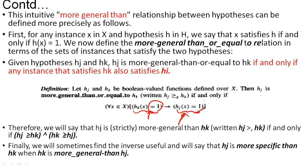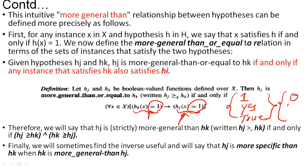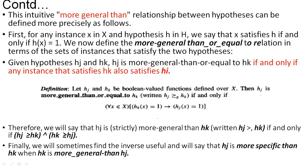The notation equal to 1 indicates a positive classification. We use three notations for positive instances: 1, yes, or true. For negative classification, the equivalents are 0, no, or false. So hj is more general than hk, and that means hk is more specific. Our goal is to move from more general toward more specific.